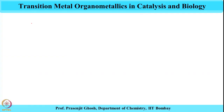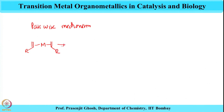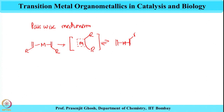In the last class, we spoke about the pairwise mechanism. In the pairwise mechanism, two olefins get paired up in the presence of a metal to give some kind of paired intermediate with the metal in it, and that results in obtaining metathesis with different olefins.